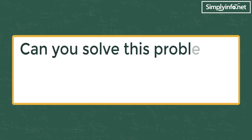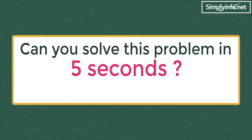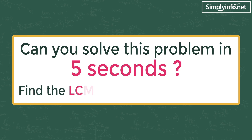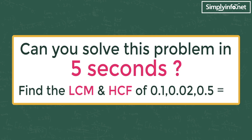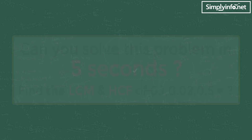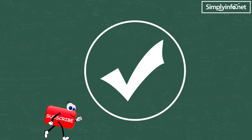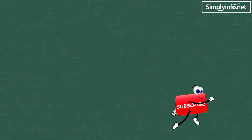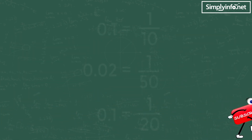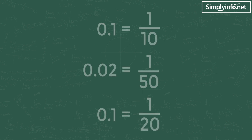Can you solve this problem in five seconds? Find the LCM and HCF of 0.1, 0.02, and 0.5. The answer is yes, if you know this formula. The only thing we need to do is convert decimals into fractions.